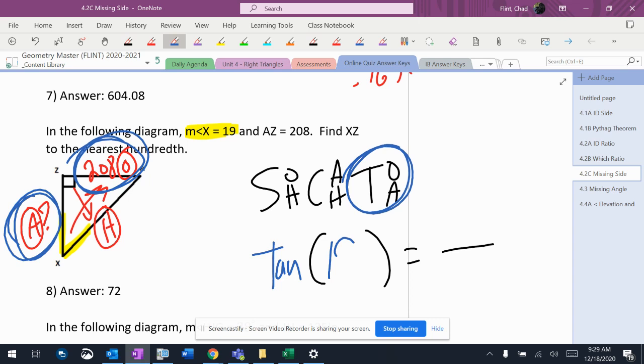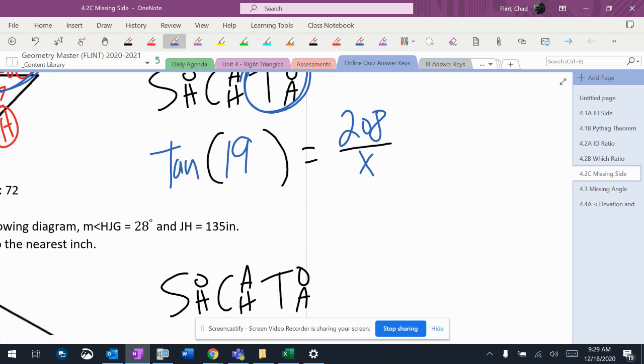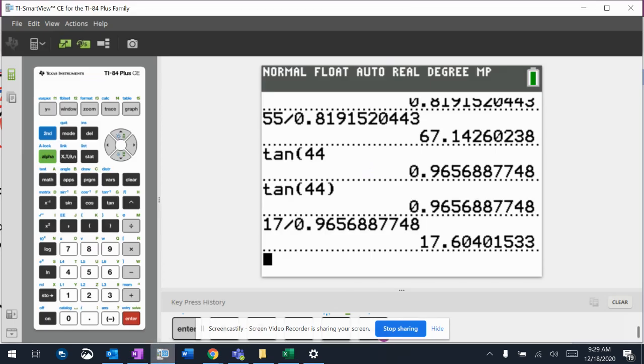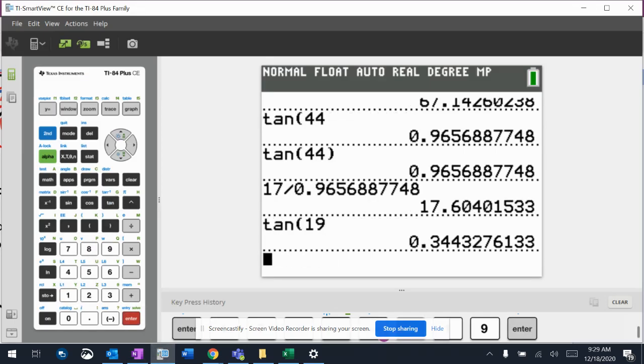The angle is 19. The opposite is 208. The adjacent is X, so I don't know it. So I put it over 1. Tan of 19 is 0.344.